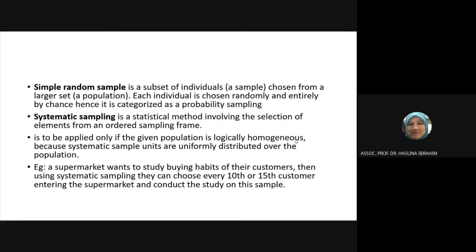Here is a good example of systematic sampling: a supermarket wants to study the buying habits of their customers. Using systematic sampling, they can choose every 10th or 15th customer entering the supermarket to study. Collecting data can also be done in this manner.